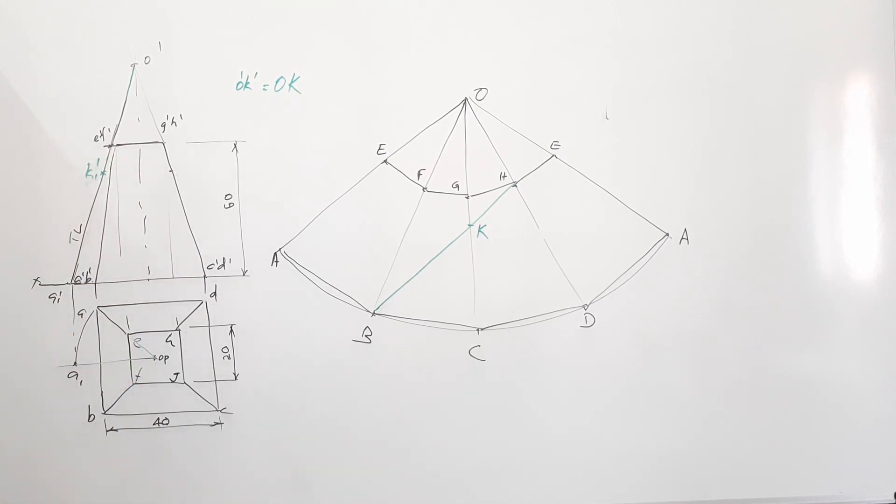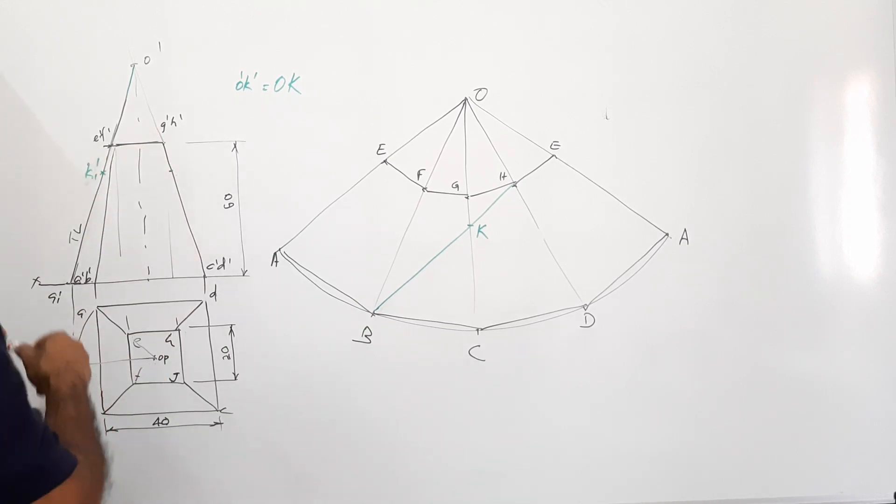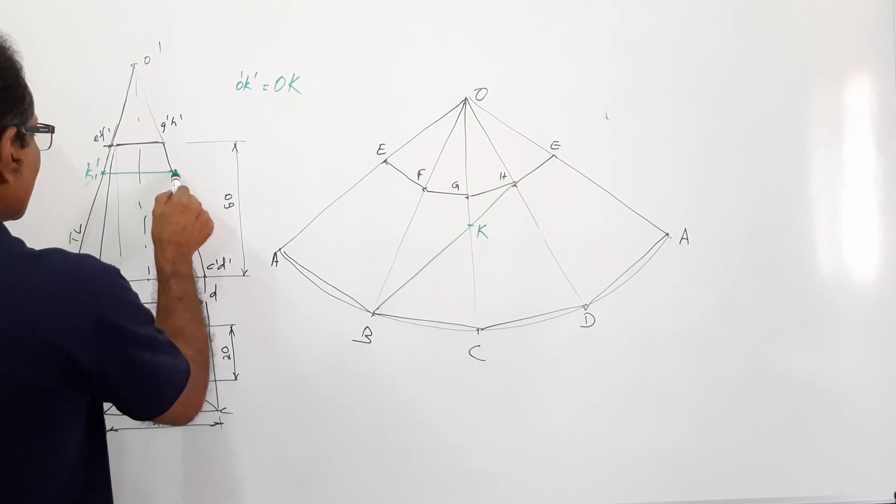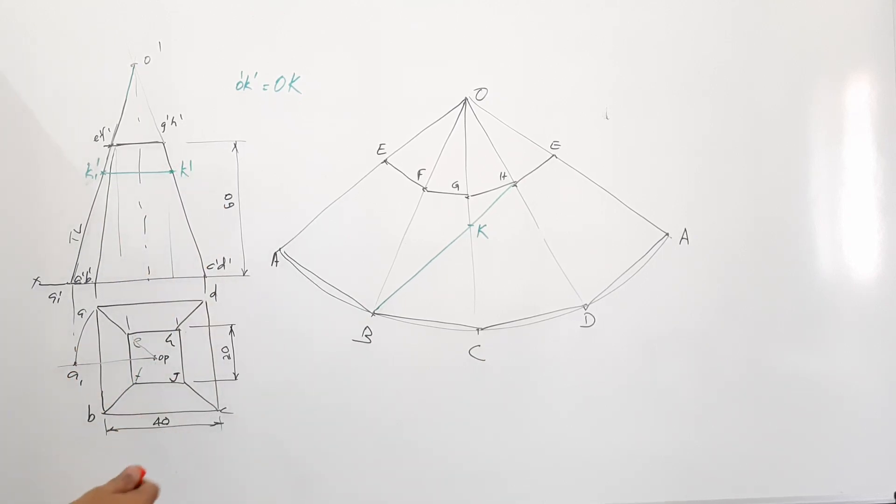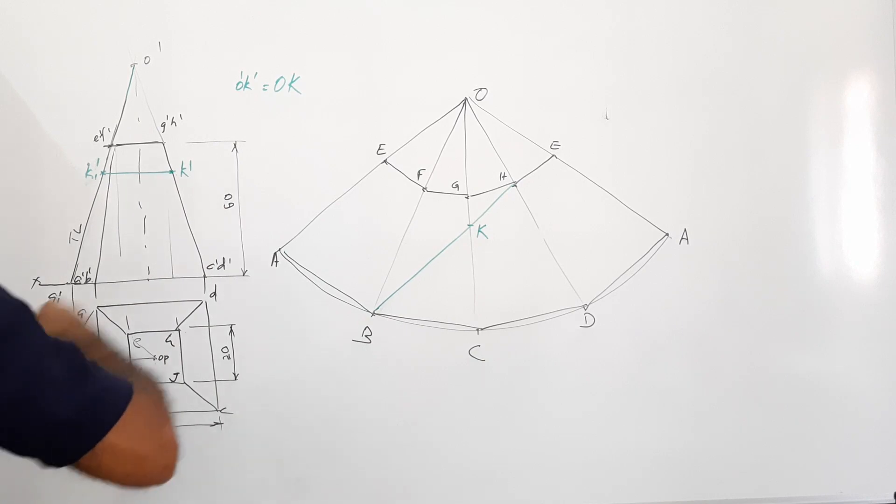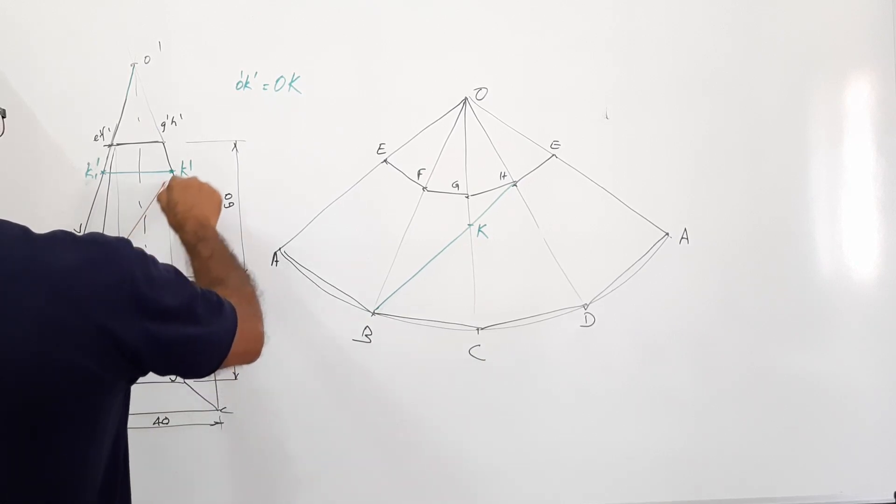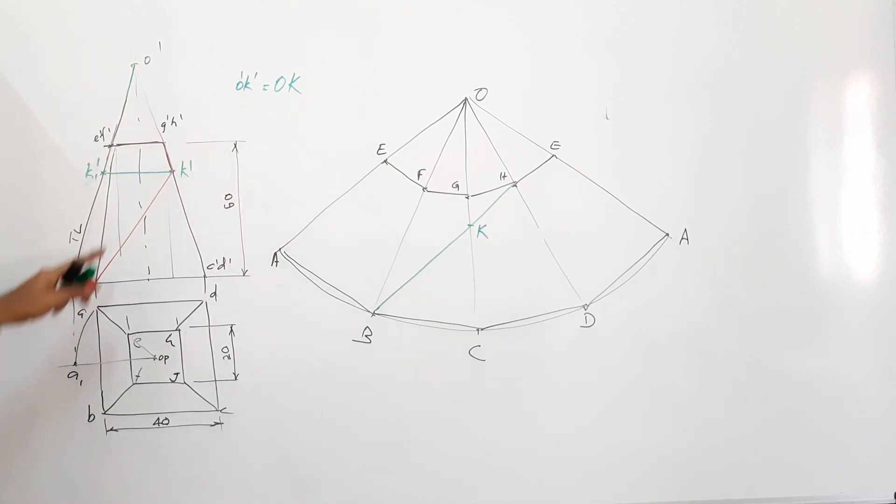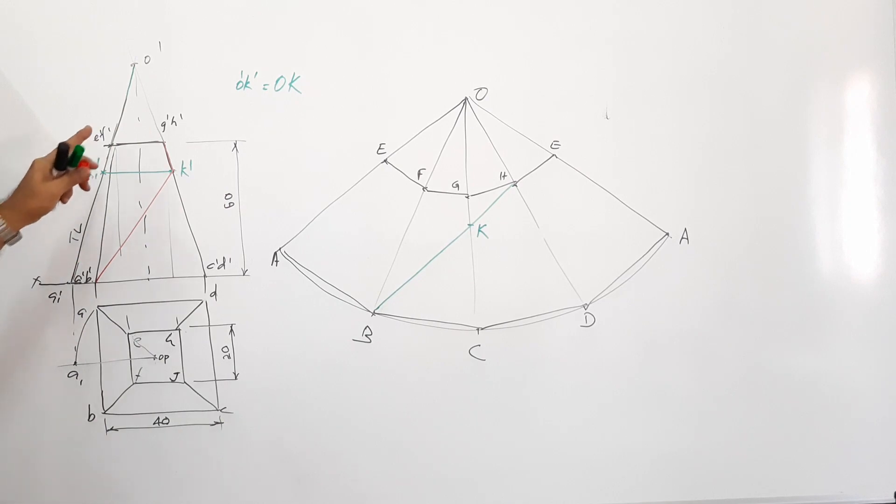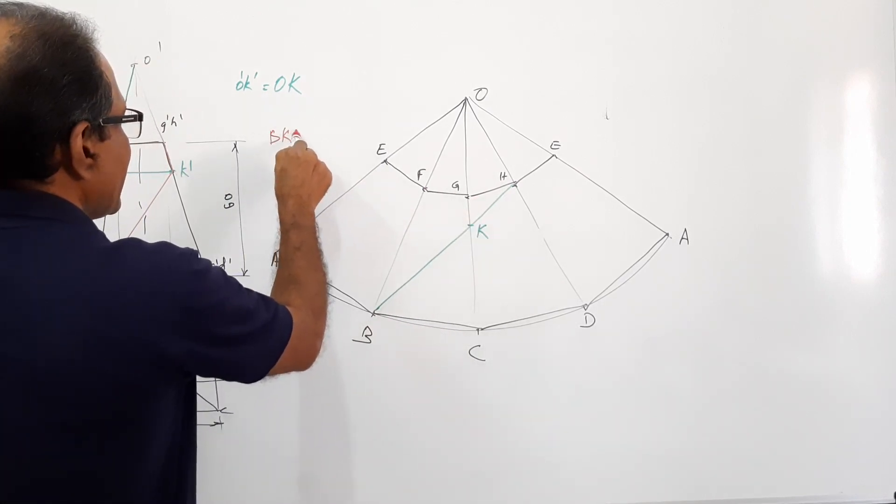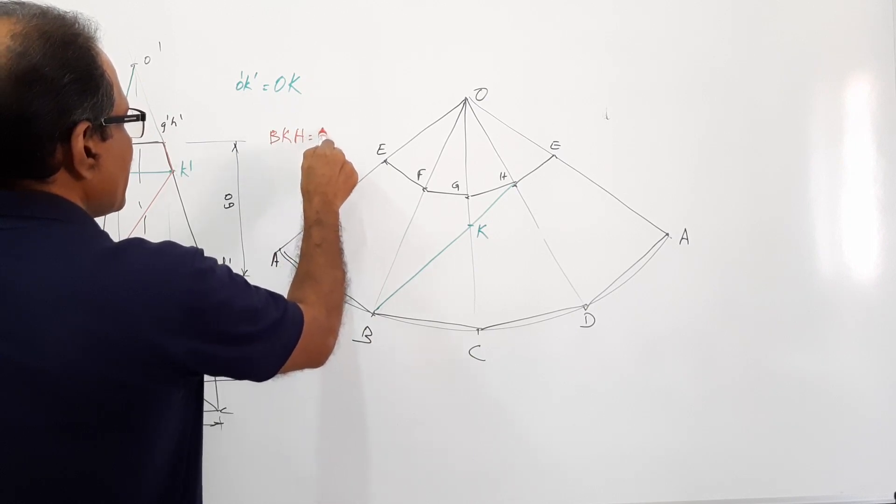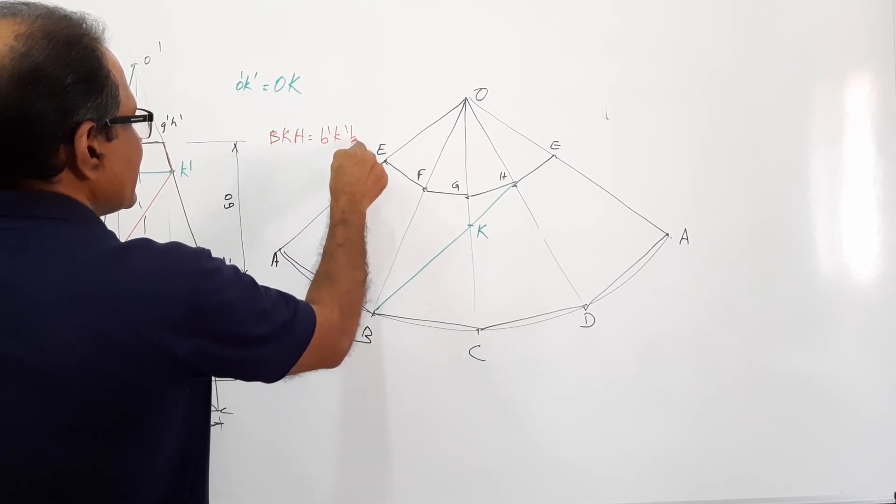Now where is actually K dash? K dash is on G dash C dash. This is K dash C dash - go there, straight line. What is this? This is K dash. Now where is the path? B dash K dash, K dash H dash is the path in the elevation. B, K, H, which is represented by B dash K dash H dash in the elevation.